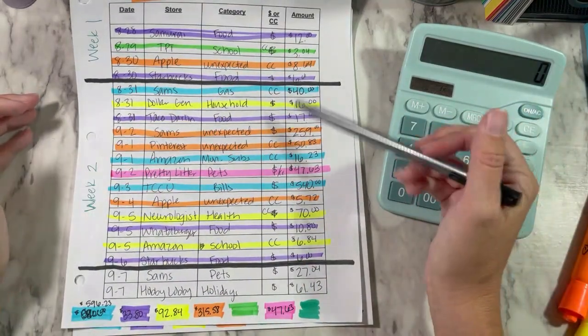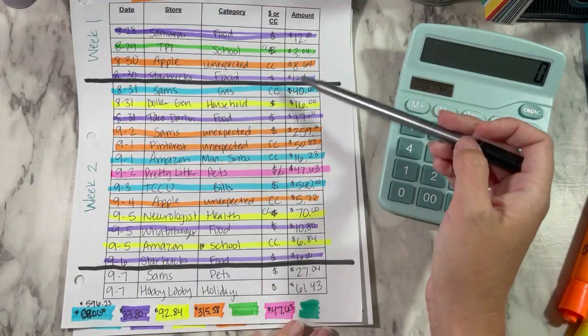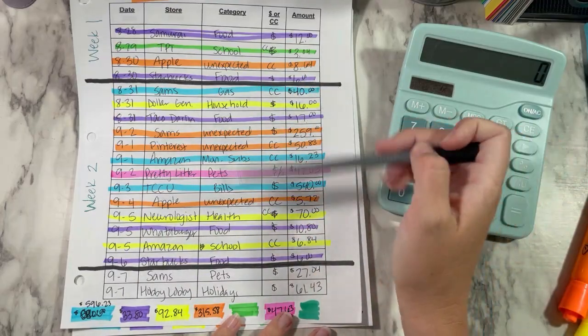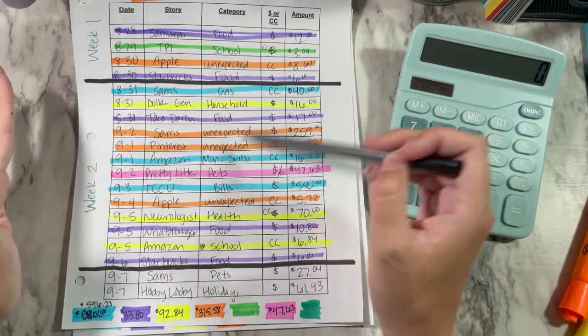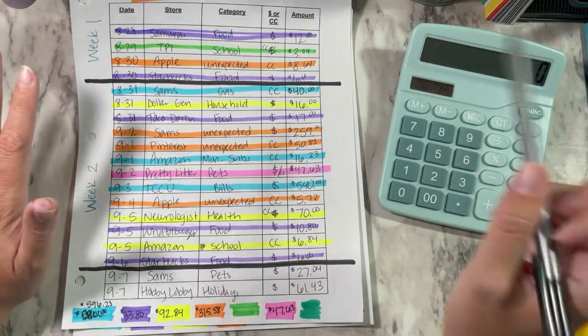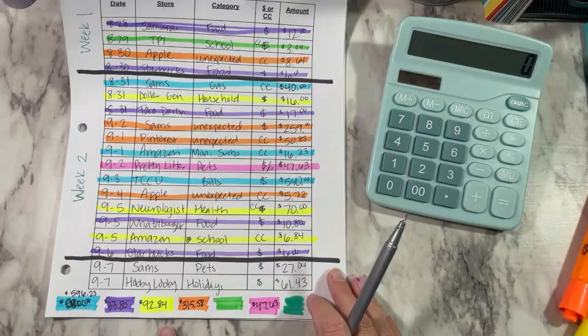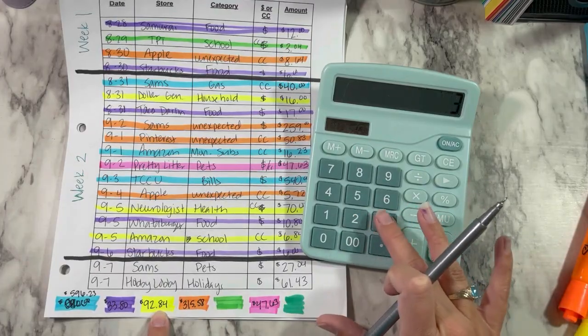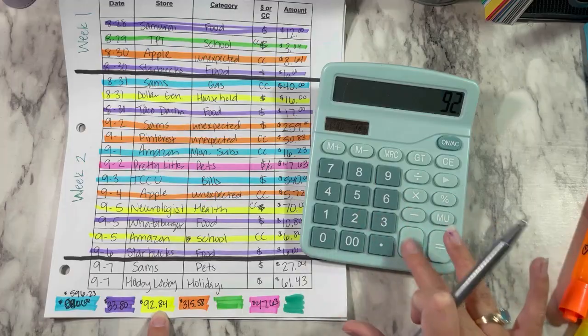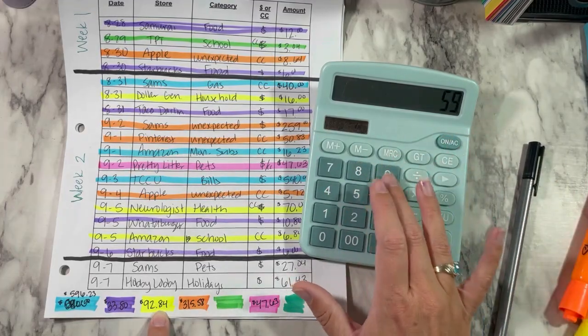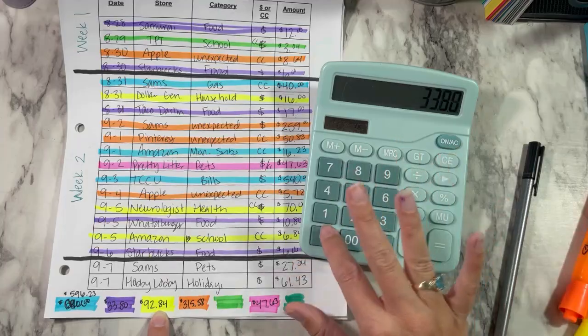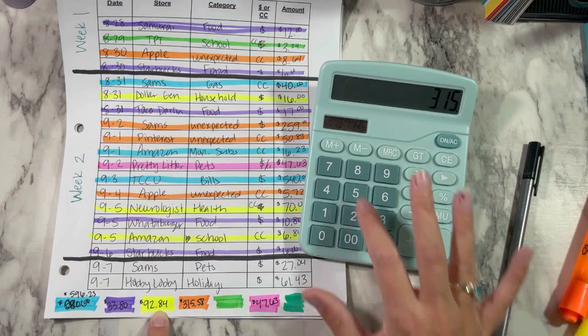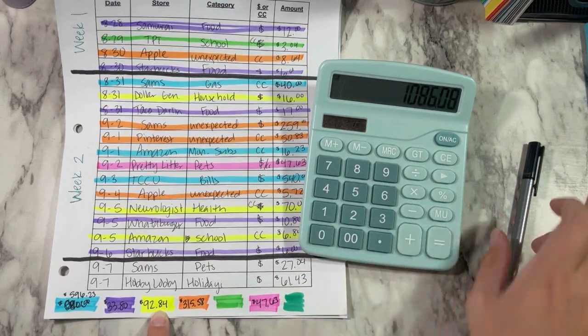So that is everything I bought for this week. So this is going from Friday to Friday. And when you're seeing this, it should be Wednesday. So this is for last week. And so I did better with the spending as far as not using a whole page. However, there were some unexpected things that kind of put me out of budget. So let's see how much we spent this week. And it's going to be way too much. You can already tell. So $596.23 plus $33.80 plus $92.84. Oh my gosh. I am not doing well with this calculator today, guys. $33.80 plus $92.84 plus $315.58 plus $47.63. Wow.